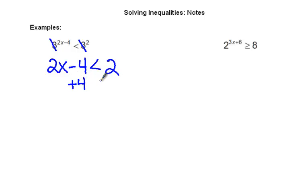Add 4 to both sides. You get 2x is less than 2 plus 4 is 6. Then you divide by 2. Then you get x is less than 3.